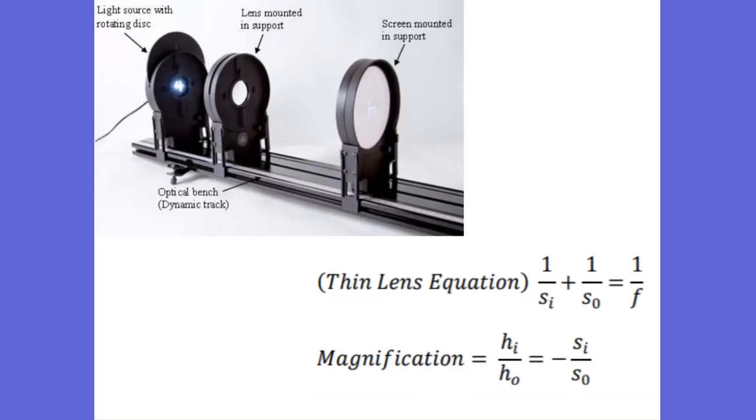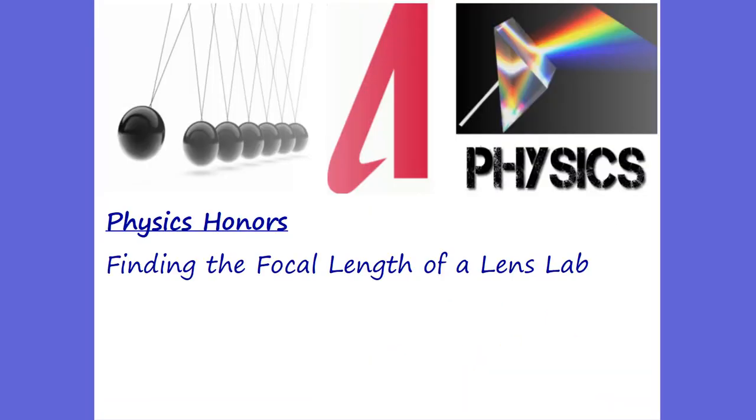And so your job is to find each one of those focal lengths for lab lens number one, number two, and number three. Put that in MrAden.com. Don't put centimeters with it. Just input your number. Like if your focal length is 10, put in 10. And so you're going to report each one of those focal lengths for the finding the focal length of a lens lab. Thanks, guys. Bye.